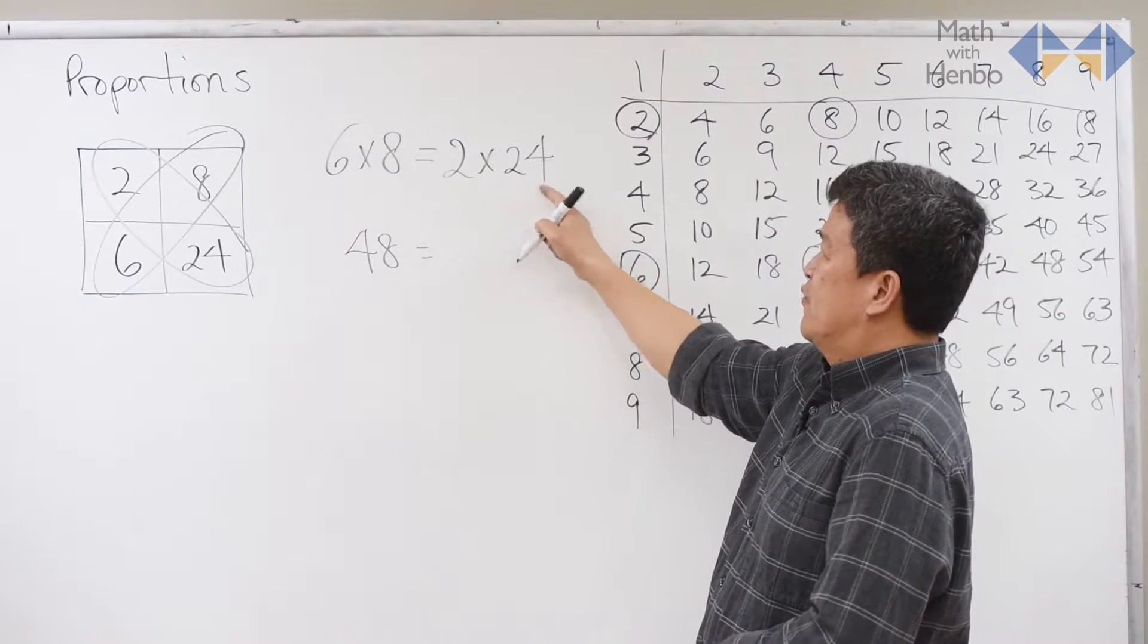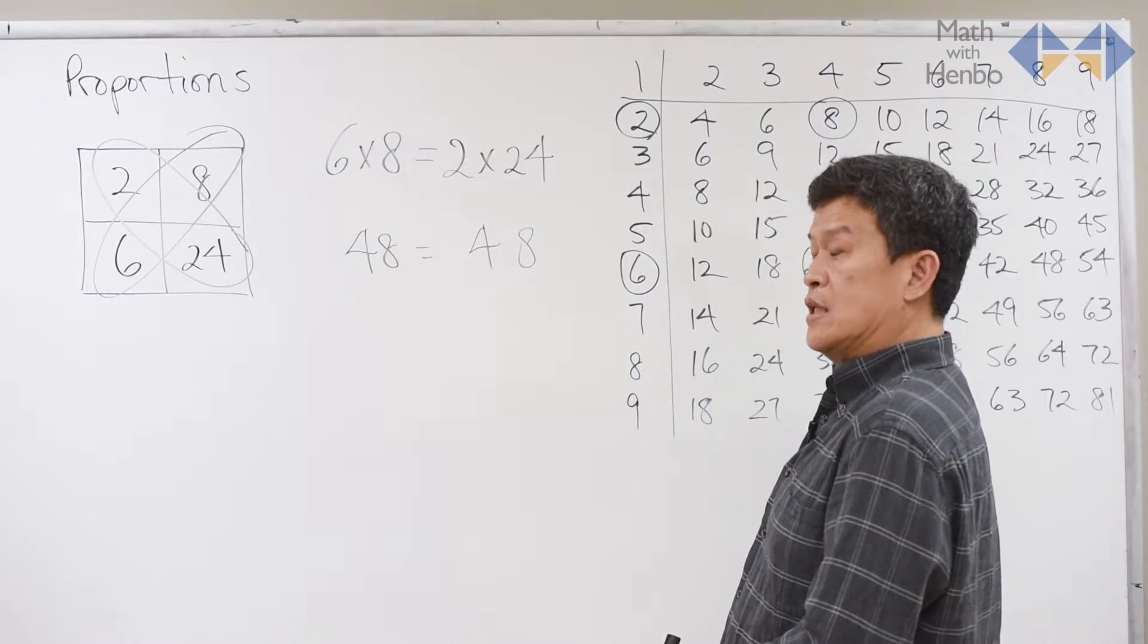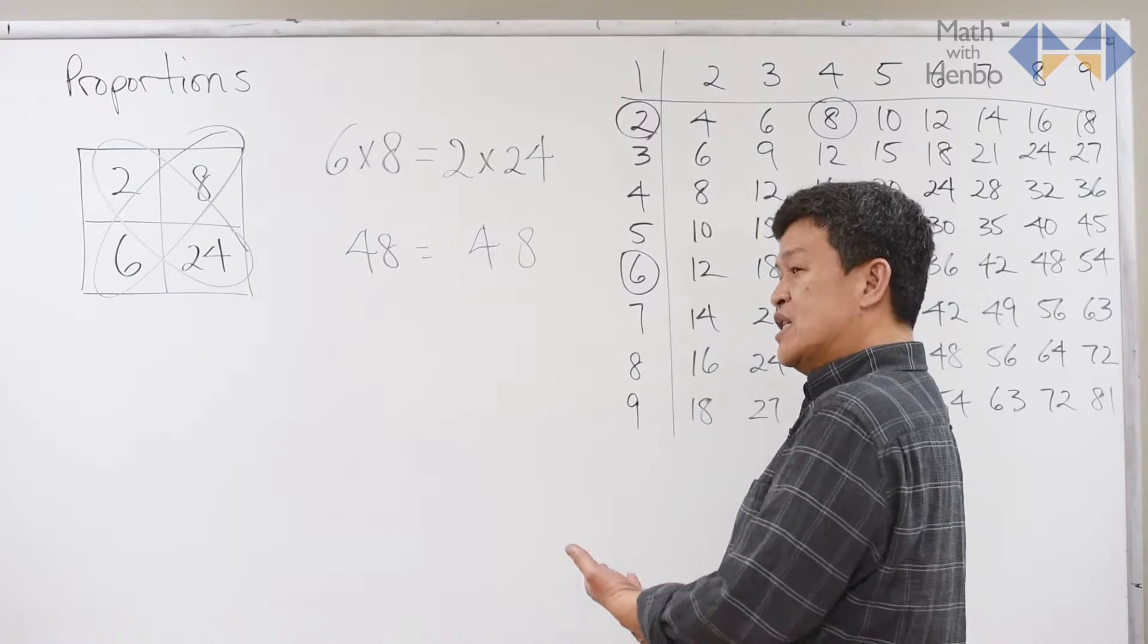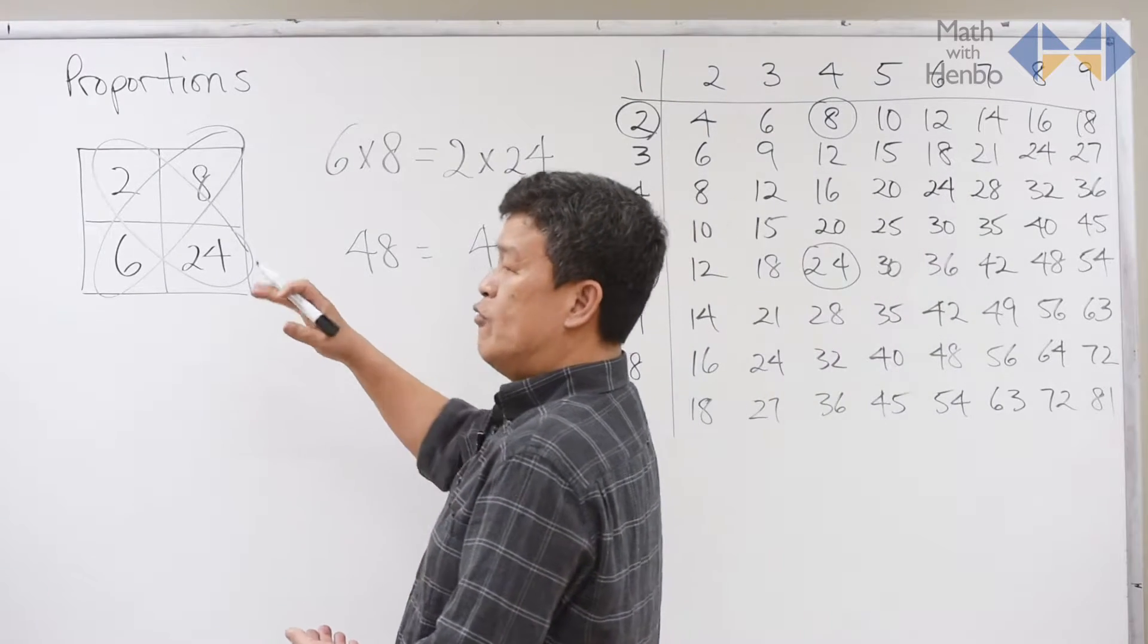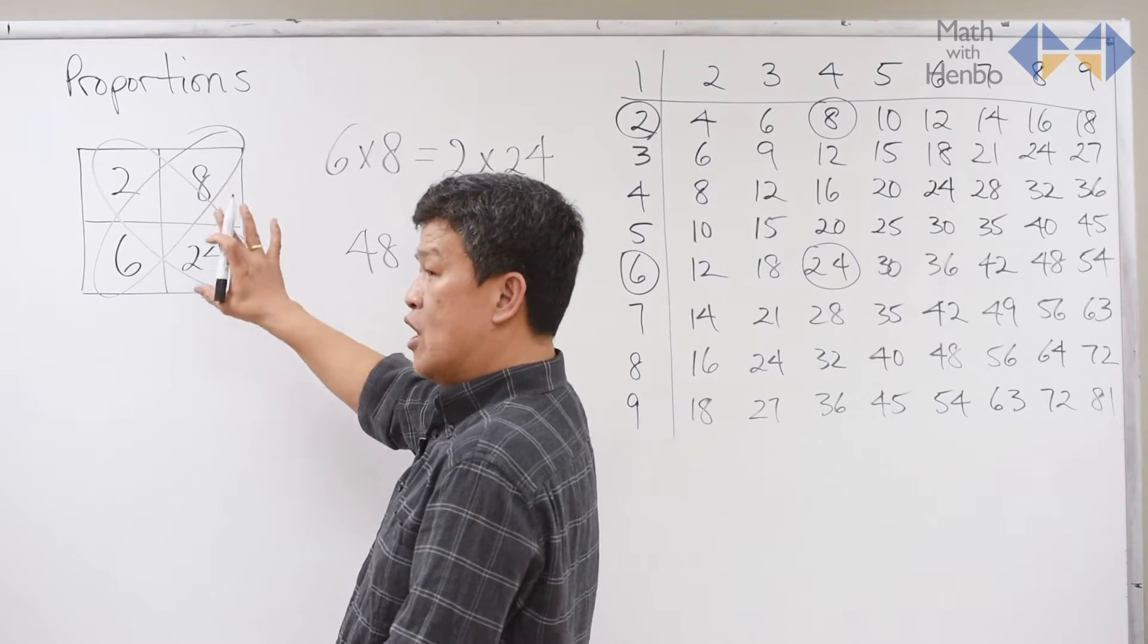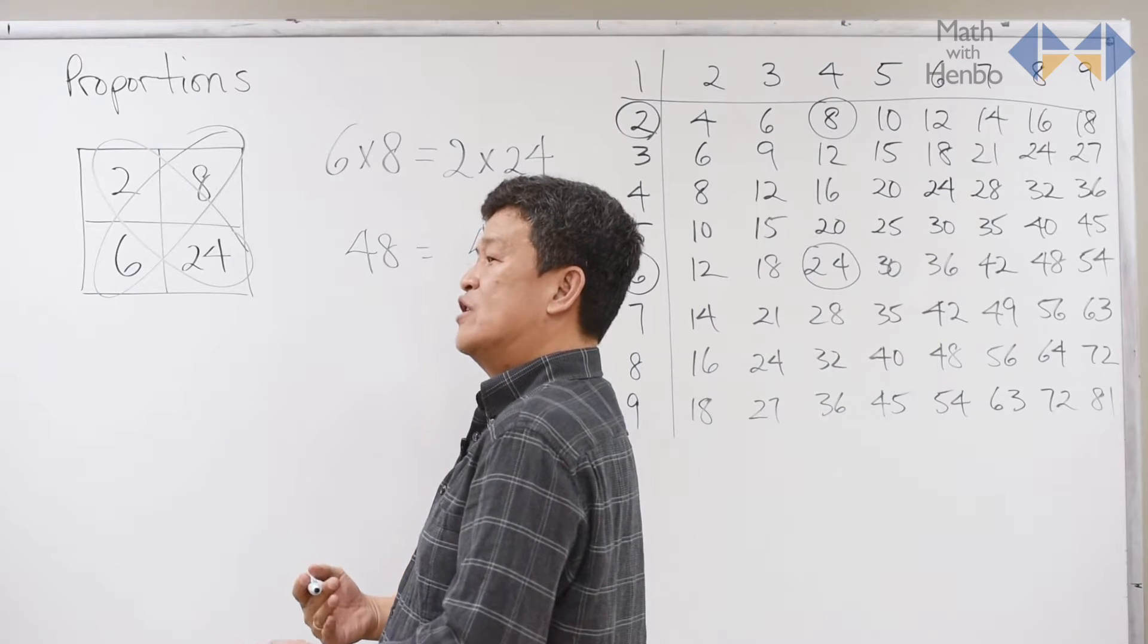2 times 24, 2 times 4 is 8, 2 times 2 is 4, so it becomes 48. Essentially, what this shows us from the times table itself is that if we set up the proportion box properly and cross-multiply each other, they should come to the same value.